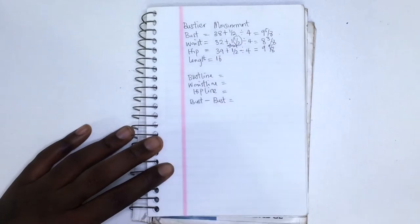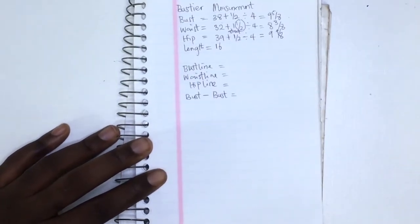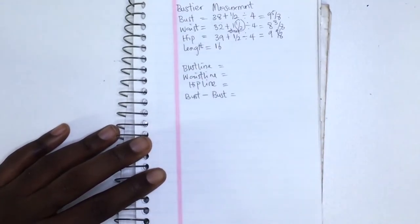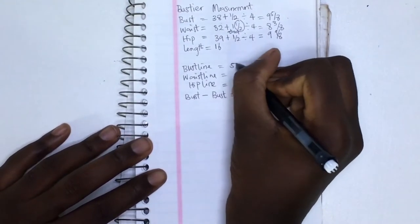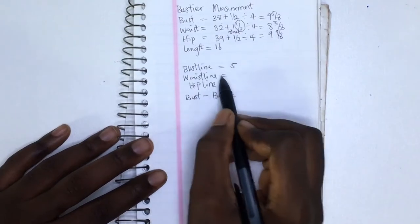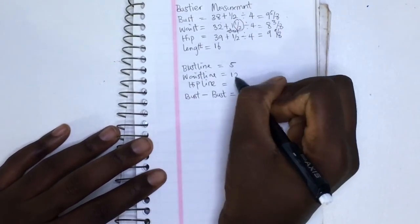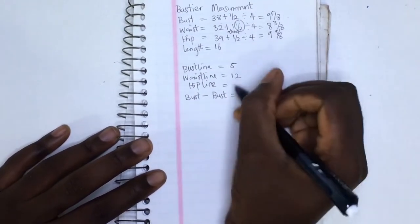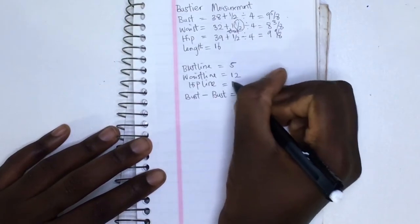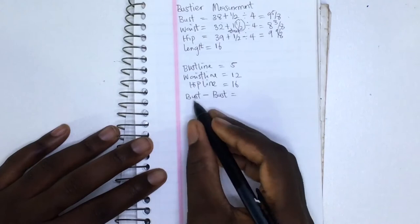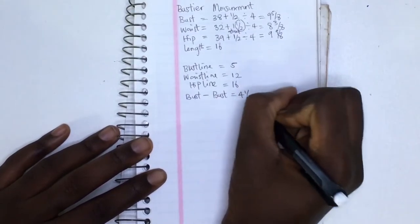My length is 16. My bust line measurement is taken from where I want my bustier to start up to the level of my bust, which is five inches. My waist placement, or my waistline, is 12 inches, and the hip line is 16, which is the same measurement as my hip. And finally, my bust to bust measurement, which is four and a half inches.